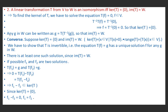Now let g ∈ W. We can write g = T(T⁻¹(g)). Therefore im(T) = W, because g is an arbitrary element of W. So we have proved ker(T) = {0} and im(T) = W.